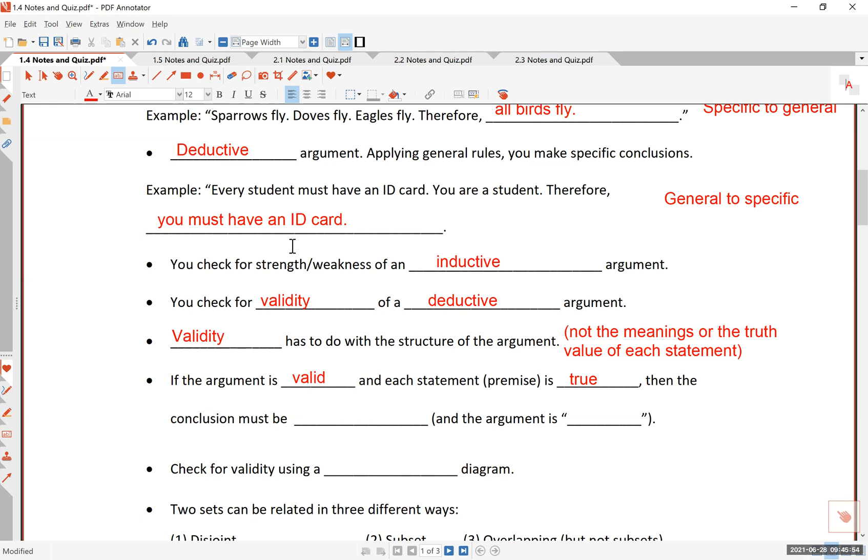Now, an example you should be looking at is right here. Let's say it is true that every student must have an ID card. And by the way, it is true at most colleges. And if let's say you are indeed a student, then it is undeniable that you must have an ID card. Here, the logical structure is valid, and each of these two statements is correct, then the argument has to have the correct conclusion, and the conclusion must be true. And in this case, if you have a valid argument with true premises, we say the argument is...